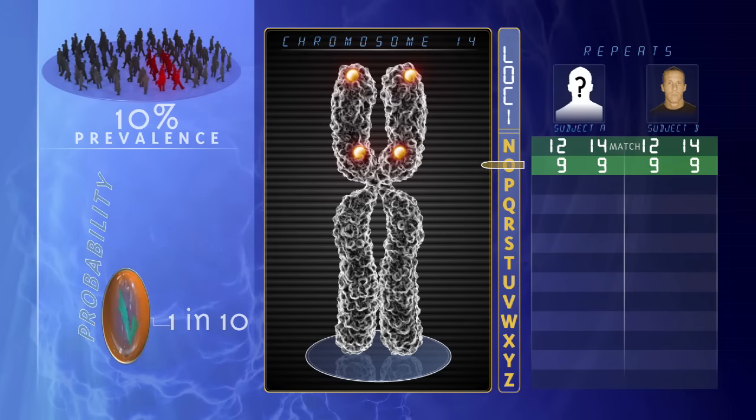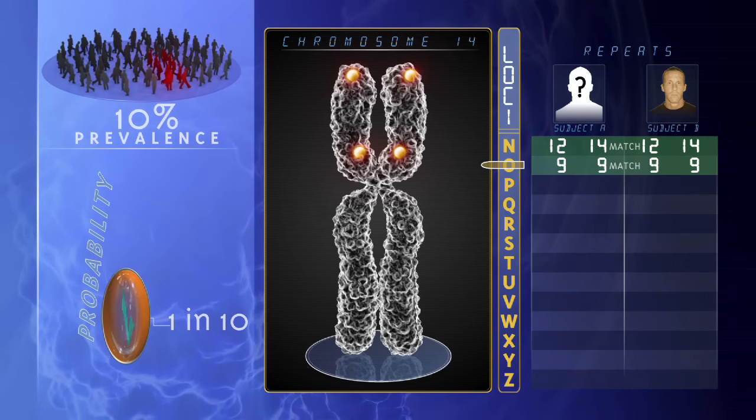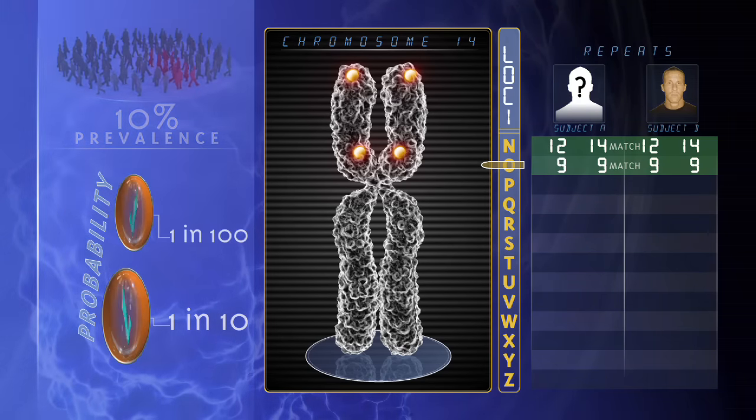If two sites with the same prevalence match, the odds drop to 1 in 100 that the similarity is coincidental.